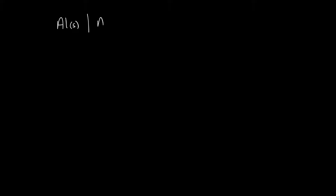One other thing you might see in cell notation problems is the inclusion of solution concentrations. For example, you might see aluminum aqueous with a concentration of 0.15 molar written after a comma, then the salt bridge, followed by the cathode written the same way. This is a common way to represent the molarity of the solutions in cell notation.